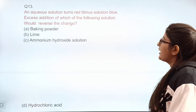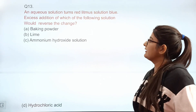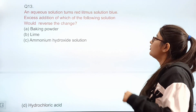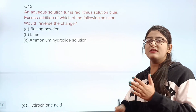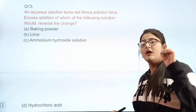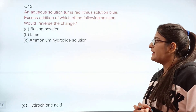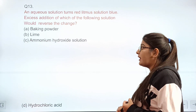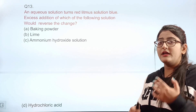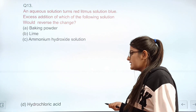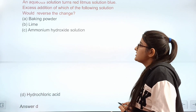Question 13: Which solution turns red litmus solution to blue? An aqueous solution turns red litmus to blue. Now, excess addition of which of the following would reverse the change? Option A: baking powder. Option B: lime. Option C: ammonium hydroxide solution. Option D: hydrochloric acid. Correct answer: D — adding hydrochloric acid reverses the change.